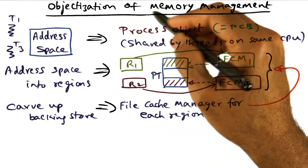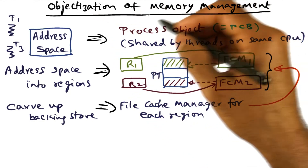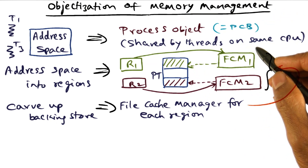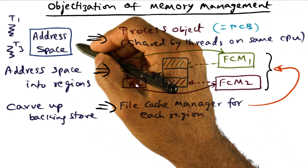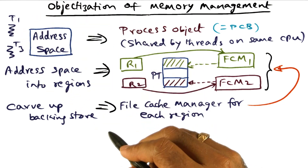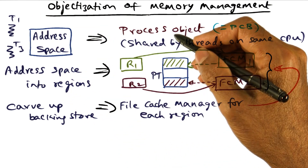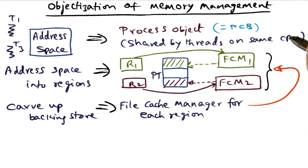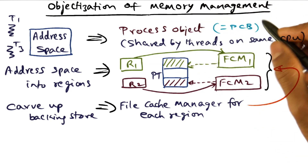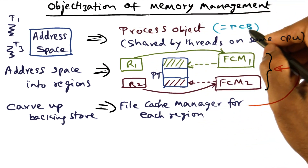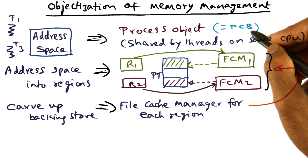Using object as a structuring mechanism, let's talk about objectization of the memory management function. We first start with the address space of the process. The address space of the process is shared by all the threads, and there's got to be a representation for the address space — that is your process object. It is shared by all the threads executing on the CPU. You can think of this process object as somewhat equivalent to the process control block in a traditional setting.